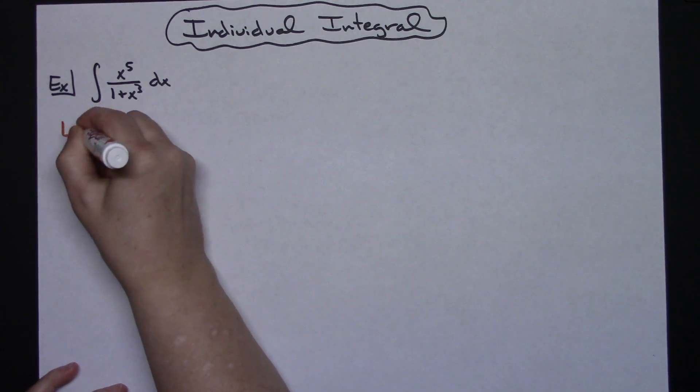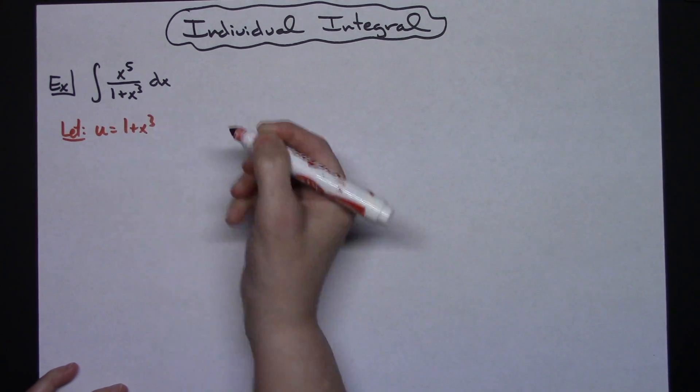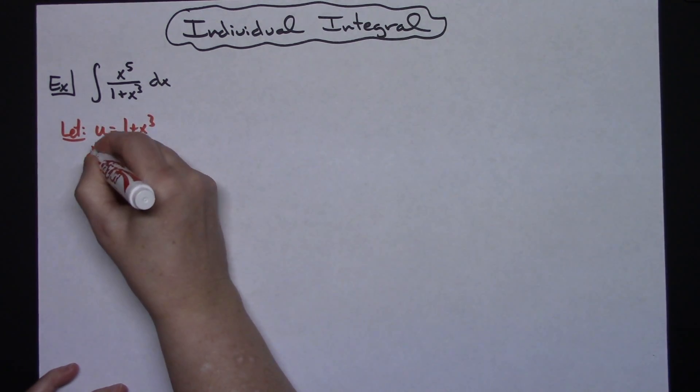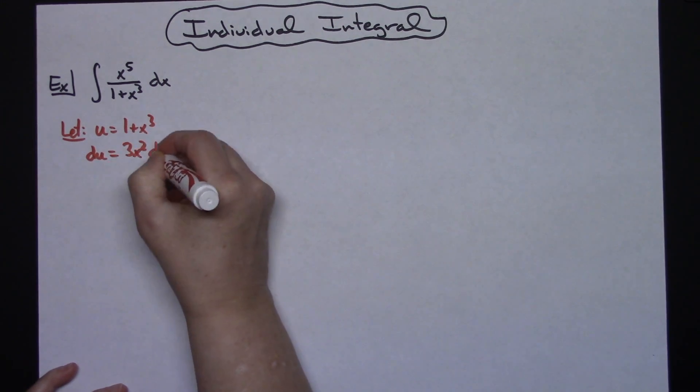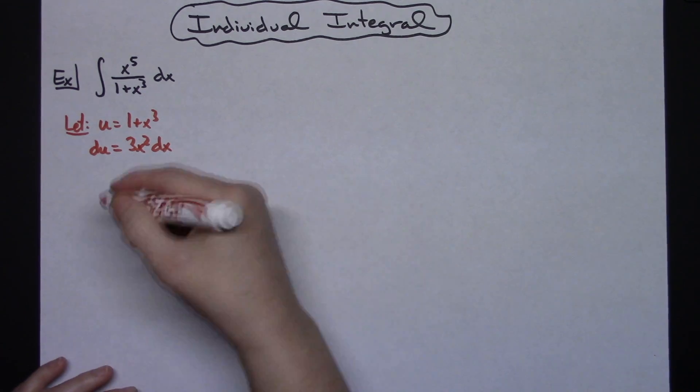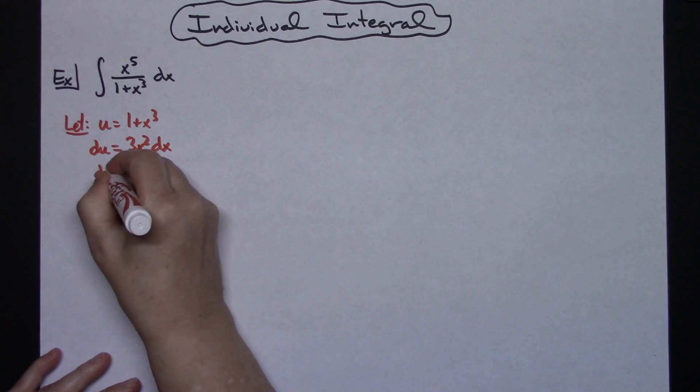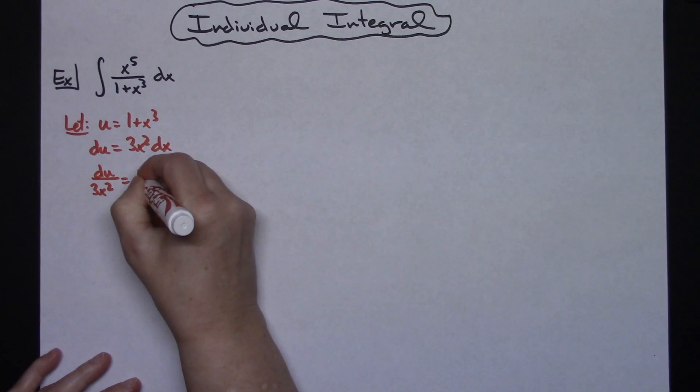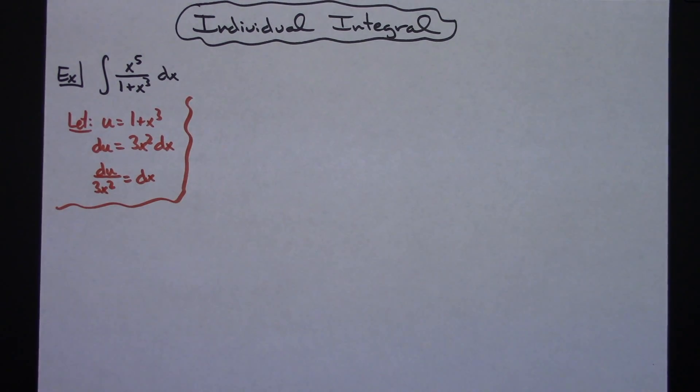I'm going to let u equal 1 plus x to the third. I'm going to take the derivative of both sides. Du is equal to 3x squared dx. I'm going to go ahead and substitute all the way down for the dx so it'll make it easier when I do my substitutions, so I'll have du over 3x squared is equal to my dx.